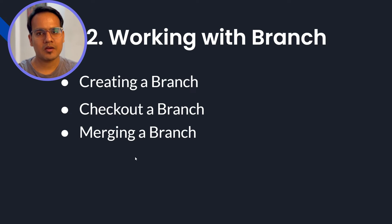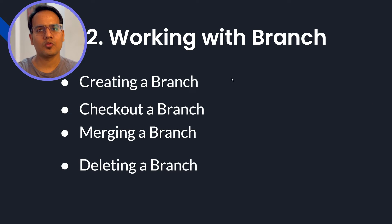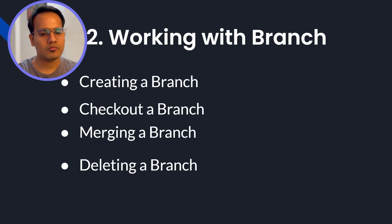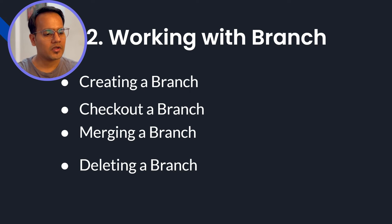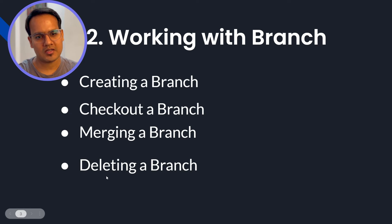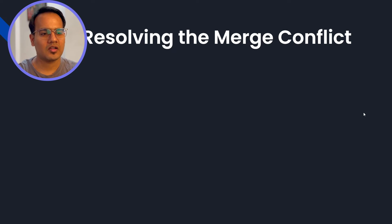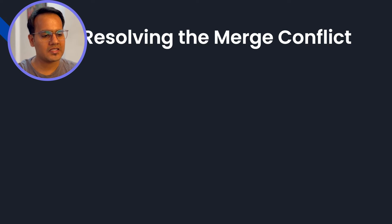The third thing is merging a branch. Once you are done with your work on a particular branch, you want to merge the code back into the branch from where you took it, so you should be aware of merging. Next is deleting a branch — once your work is done on a particular branch, you should know how to delete it, because unnecessarily keeping a branch creates garbage in the repository tree.